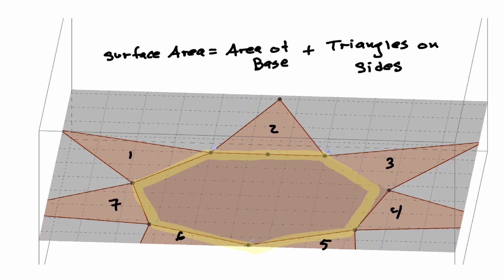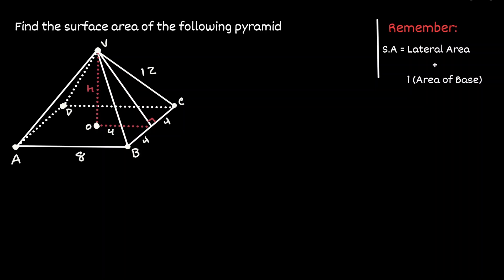Let's take a look at one example. So given the following pyramid, let's find the surface area of it. And previously, we saw that the surface area is equivalent to the area of the base plus the area of all the triangles that surround the figure, which we refer to as the lateral area.